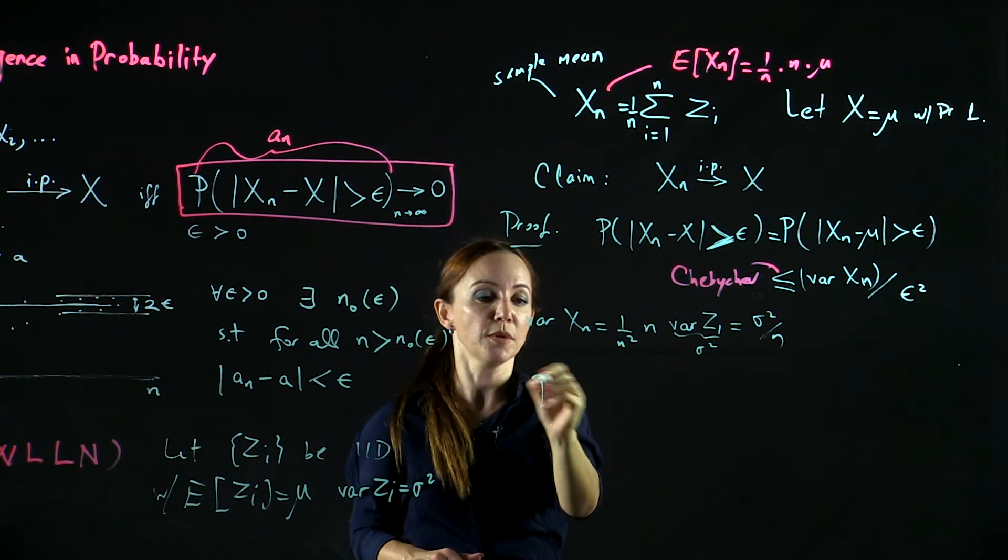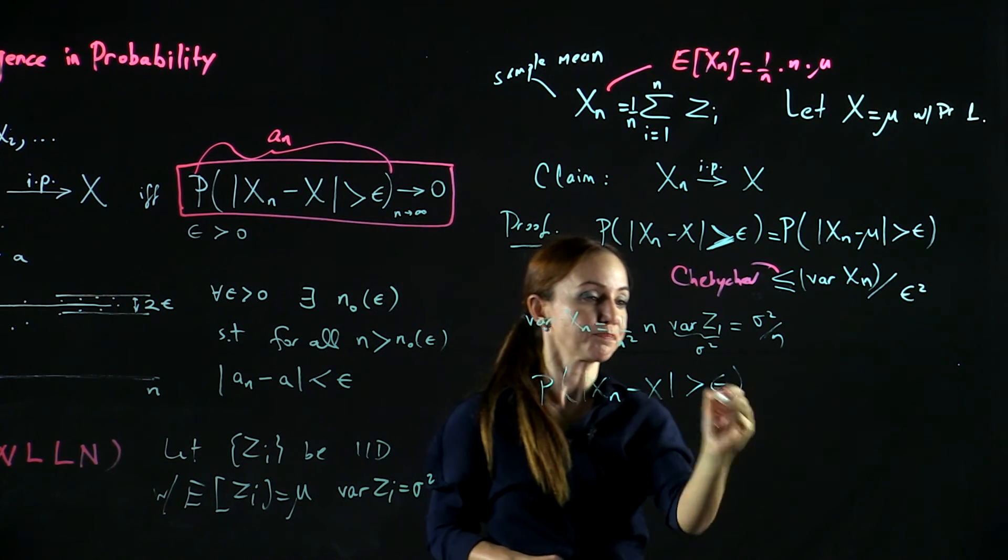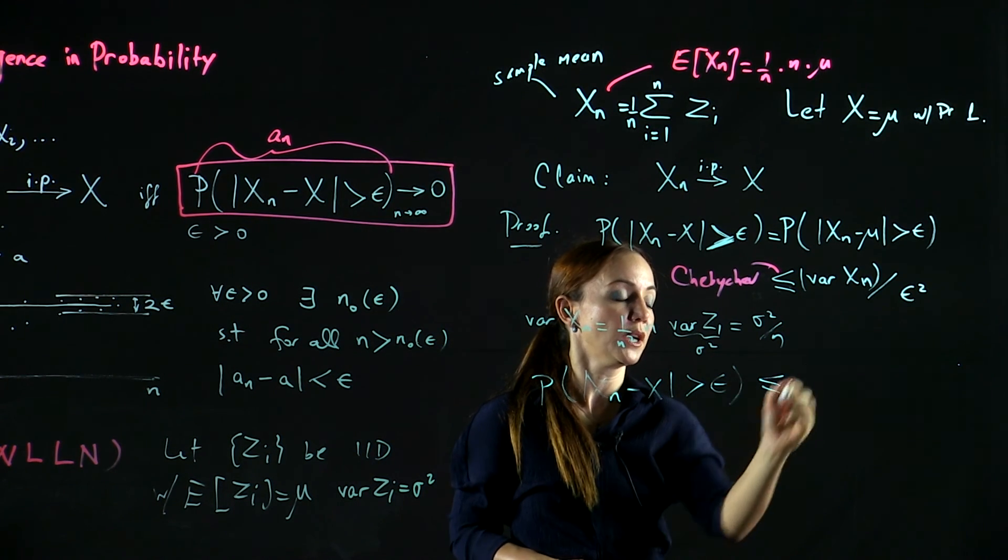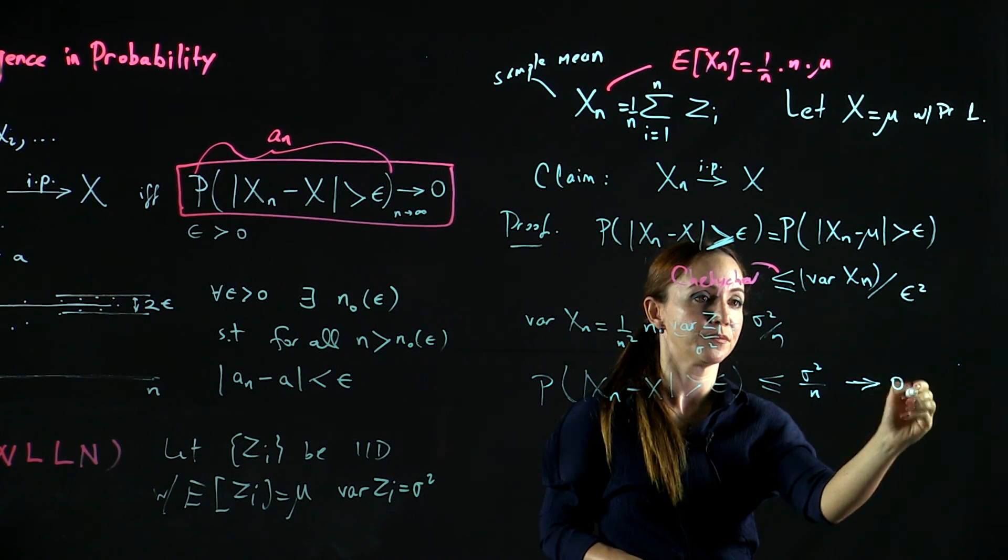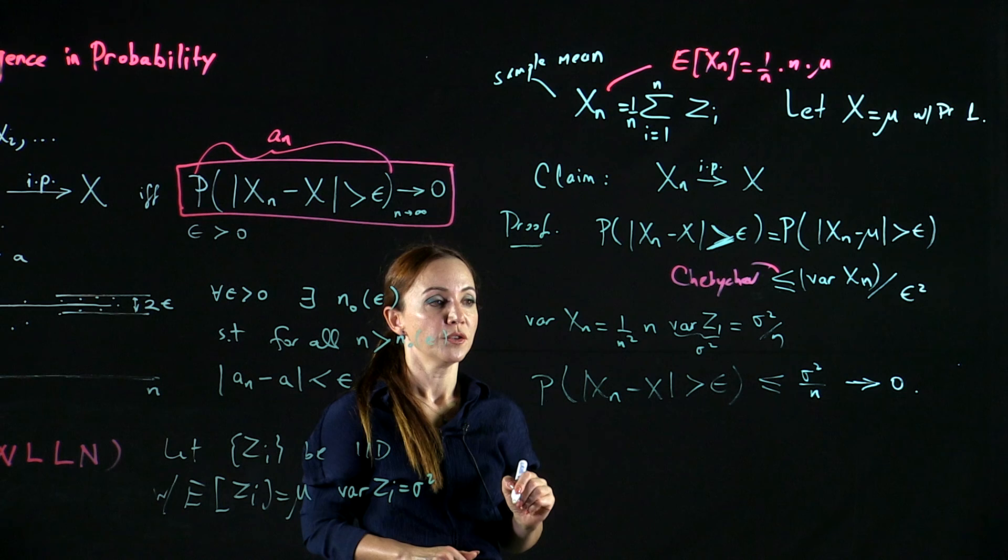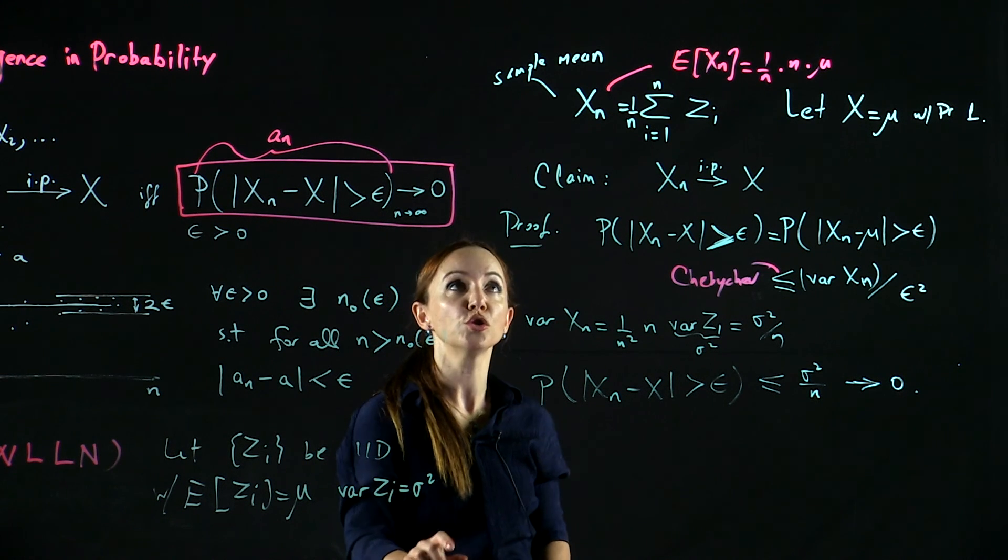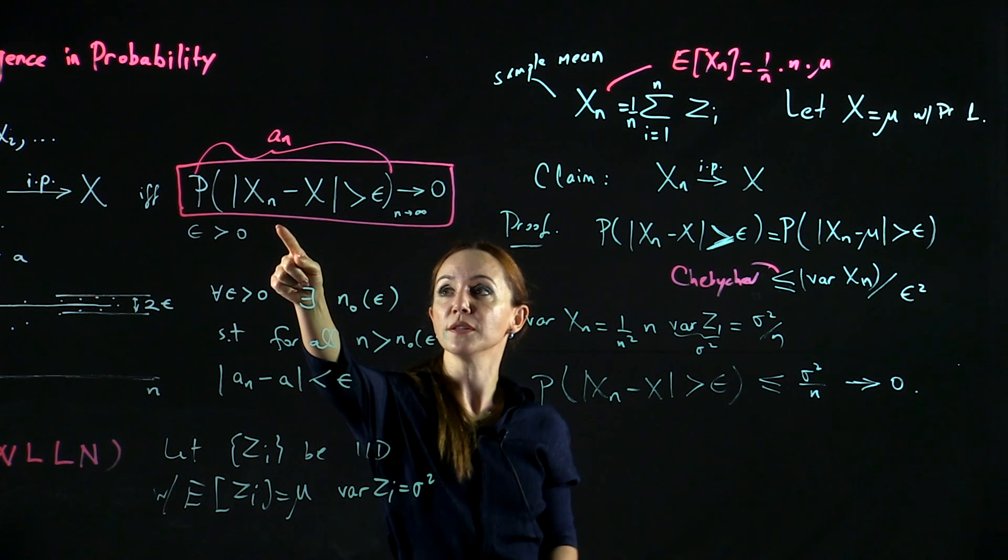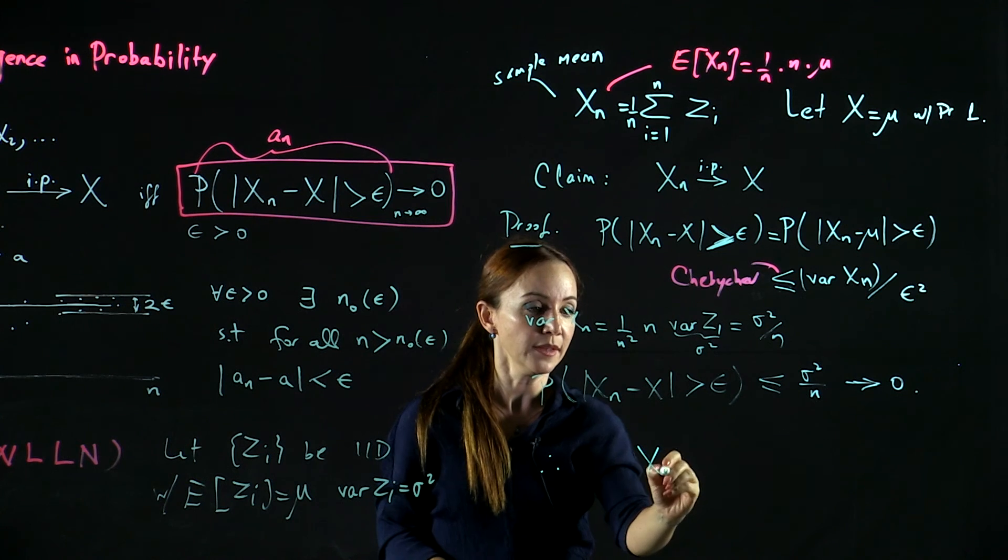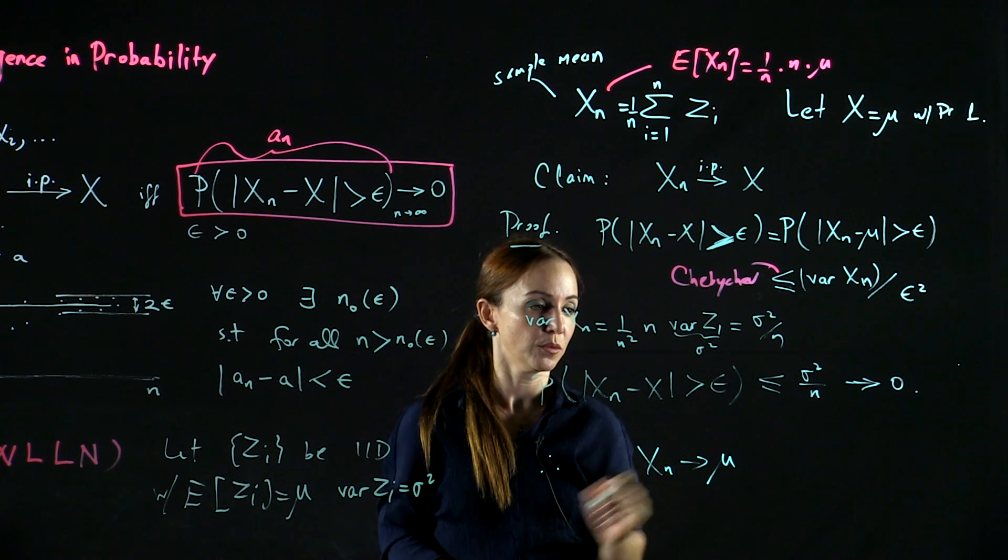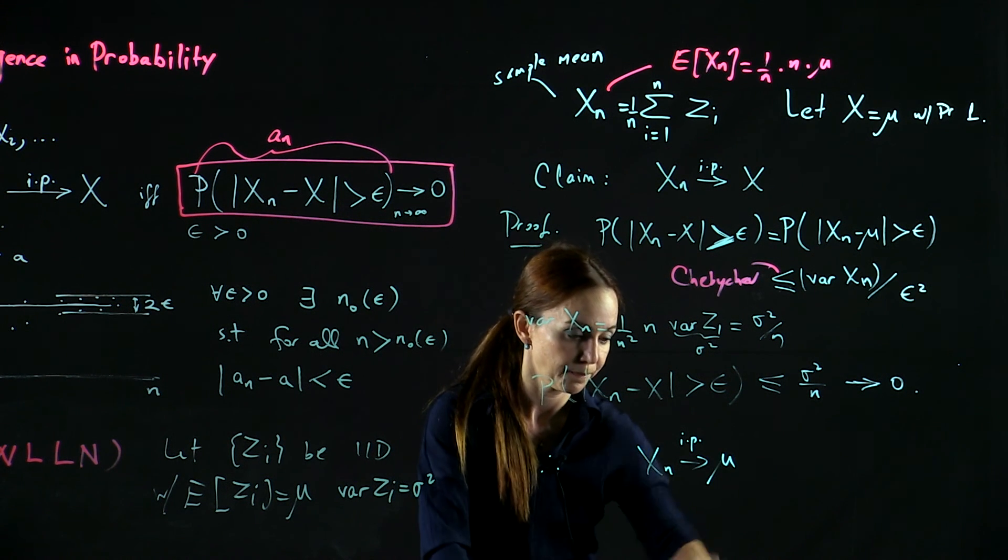So this shows that the probability that XN minus X exceeds epsilon is less than or equal to sigma squared over N, which goes to 0. So then by definition of convergence in probability, we conclude that XN converges to mu in probability.